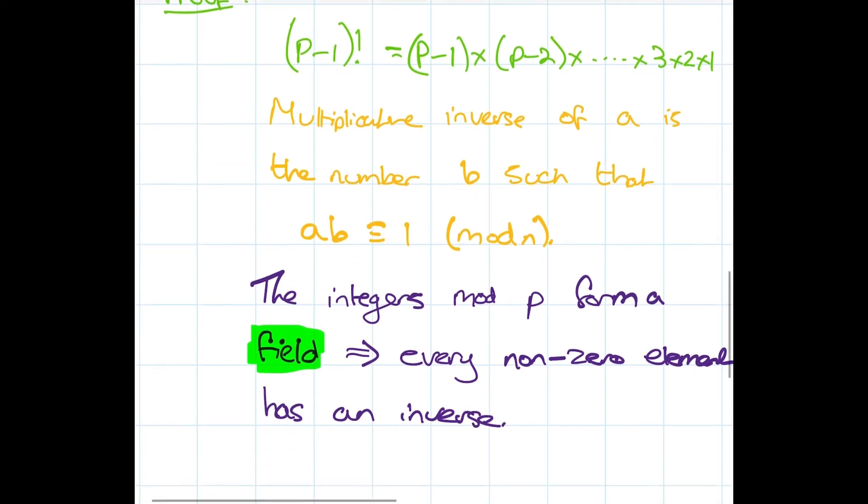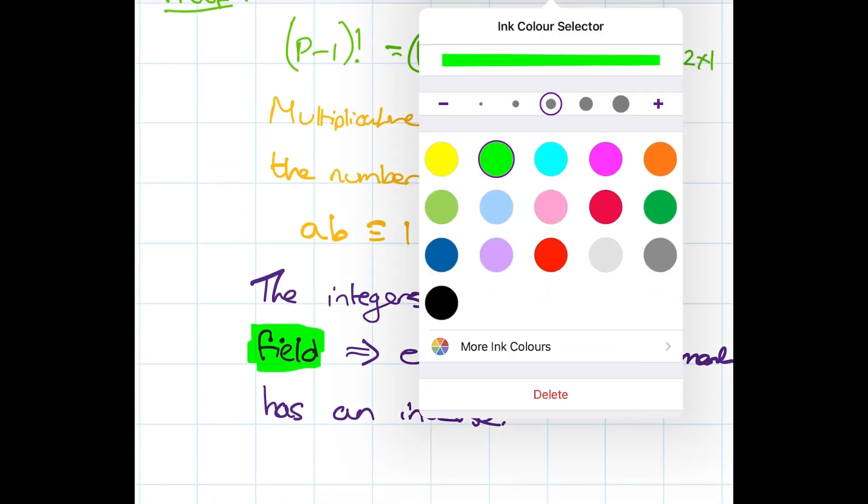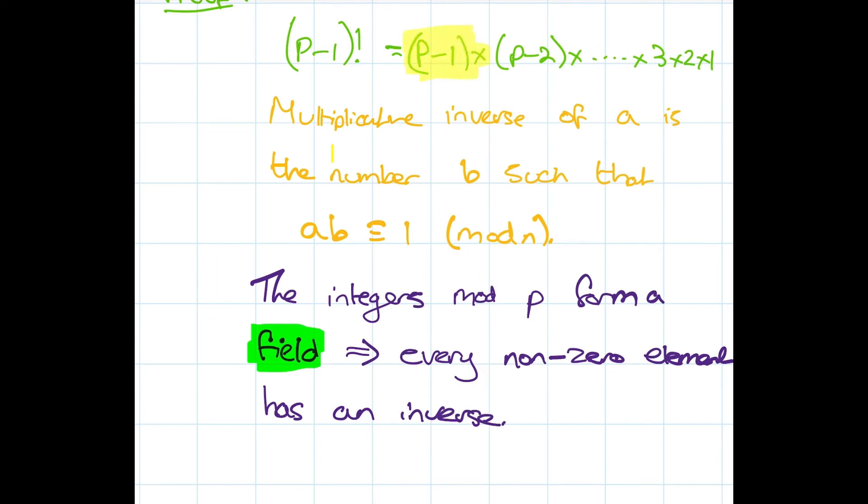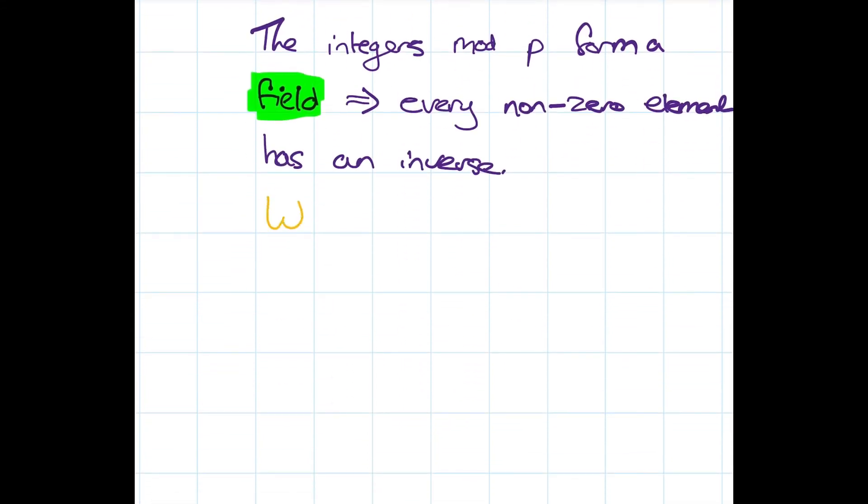This is great. These elements here can all be paired off nicely with their multiplicative inverse, and this is going to allow us to cancel everything nicely. However, there is one caveat. We need to check which elements are their own inverses, i.e., which elements x have x squared is congruent to 1 mod p.